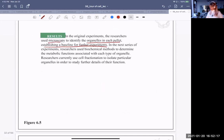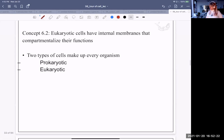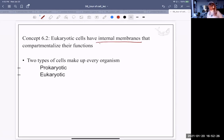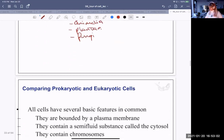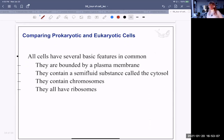So eukaryotic cells have membranes that compartmentalize their functions. Prokaryotes don't have the membranes. Eukaryotes do. So eukaryotic cells are those of the protists, of the animalia, of the plantae, and the fungi. Prokaryotic cells are bacteria. Either archaea bacteria or eubacteria. So all cells have some basic features in common. They all have a plasma membrane. They all contain a semi-fluid substance called the cytosol. They contain chromosomes. They all have ribosomes. That's what they have in common.